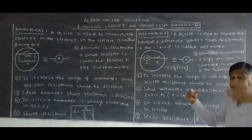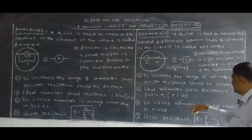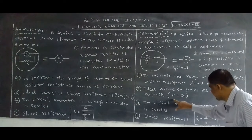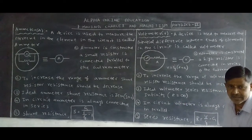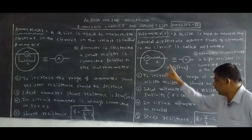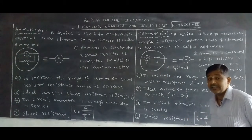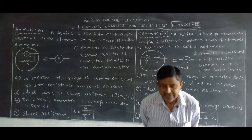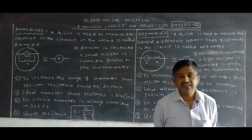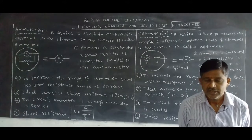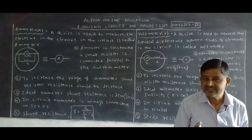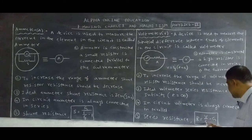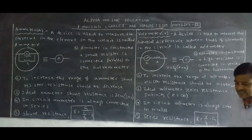For an ideal voltmeter, the series resistance is infinity. When the series resistance r is infinity, it is called an ideal voltmeter. Voltmeter in the circuit is always connected in parallel, not in series. If it is connected in series, it burns. The series resistance formula is: r = V/Ig − G. This is about voltmeter.